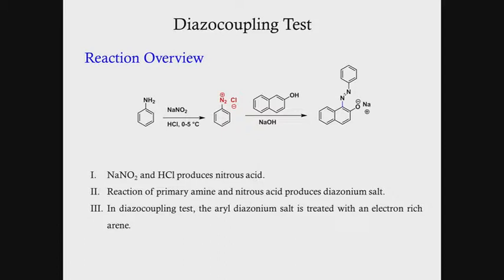What is actually happening during this reaction is that first, sodium nitrite and hydrochloric acid form nitrous acid, and once nitrous acid forms, it produces the diazonium salt. In general, during the diazo coupling test, the aryl diazonium salt is treated with an electron-rich aryl compound, which couples with the diazonium salt.